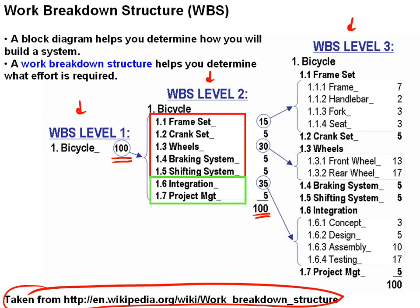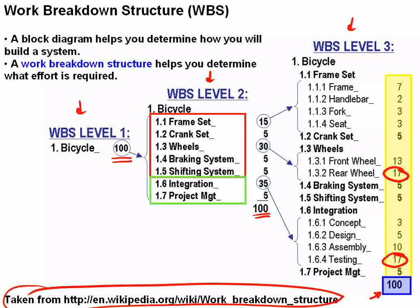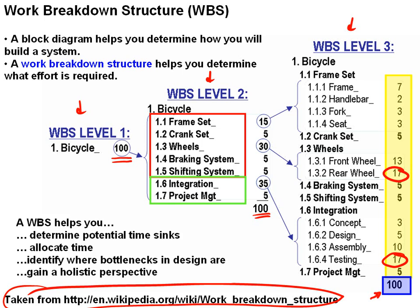On the work breakdown structure, there are also things that don't correspond to actual functions of a bicycle — integration and project management — which take effort but are not part of the bicycle's function. At the next level we break each of these down further, with detailed numbers showing the overall percentage of effort required. Building the rear wheel and testing the bicycle require much more effort than anything else, but we always sum to 100% effort. The work breakdown structure helps you determine how much time to put into things, identify potential time sinks and bottlenecks, and gives a holistic perspective of the work required. It integrates very closely with the block diagram as the first step in outlining your design.